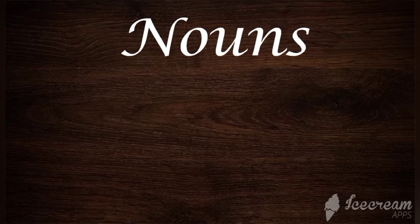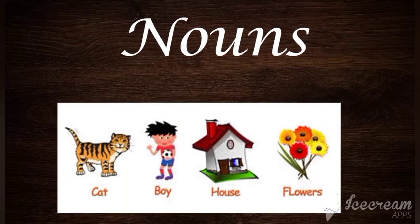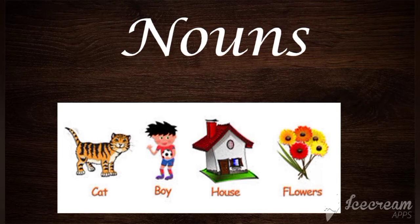I think you all know about nouns because you have been studying from maybe fourth standard. So what is a noun? Noun means the name of a person, place, or a thing. So, boy — he is a boy, it's a name. Cat — it's a naming word. House — this is a naming word. Flowers — this is a naming word. Then Jimmy, Rajesh, Zurej, Daisy, Jasmine — whatever it may be. Naming words are nouns.